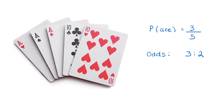If this is the hand of cards your partner has and you were to choose a card without looking, the probability of getting an ace is three out of five. There are three aces out of five cards in total. The odds in favor of getting an ace is three to two.